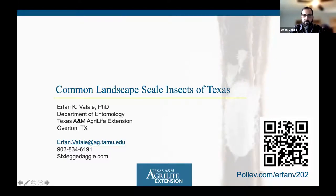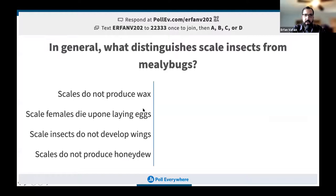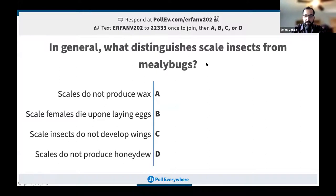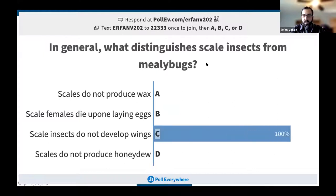As a warm-up exercise, participants are asked: what distinguishes scale insects from mealybugs? Option A: scales do not produce wax. Option B: scale females die upon laying eggs. Option C: scale insects do not develop wings. Option D: scales do not produce honeydew. Participants are invited to answer via Poll Everywhere, and those asked to register for credit can hit skip.